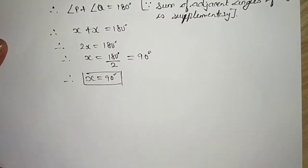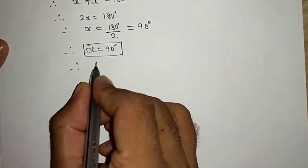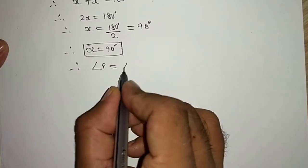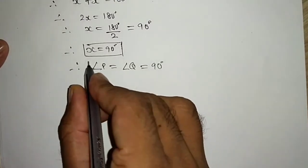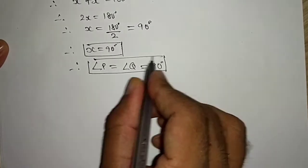So we have got therefore angle P is equal to angle Q is equal to 90 degrees. We have got two angles.